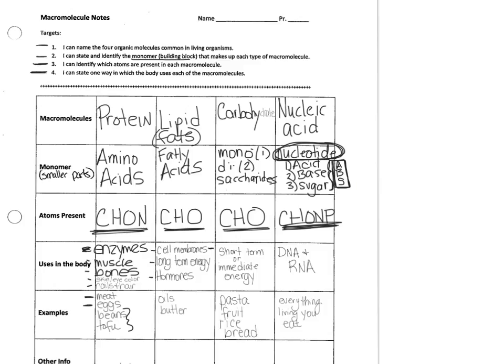That wraps up our four targets. You need to memorize these four macromolecules and be able to name them, identify the monomer, state which atoms are present, describe their uses, and give food examples. My suggestion: make some Quizlet study cards and start working on that.